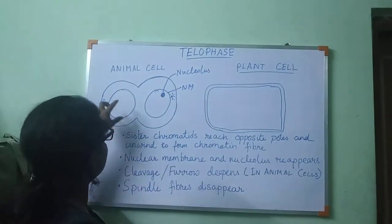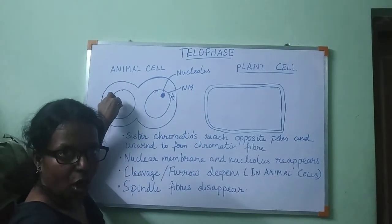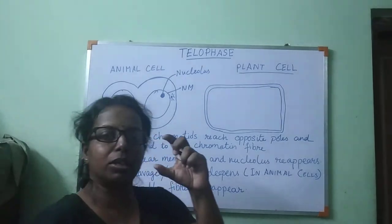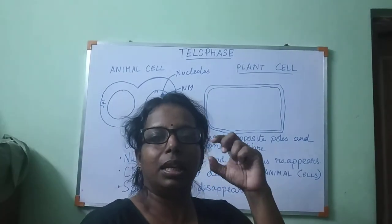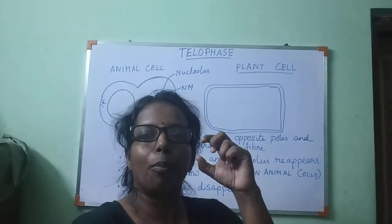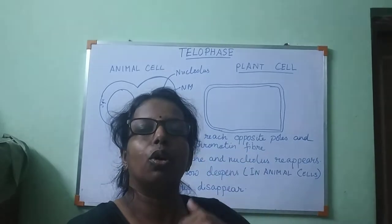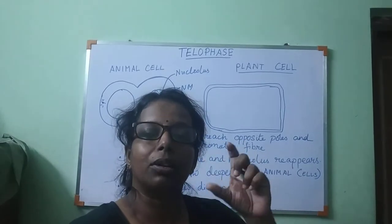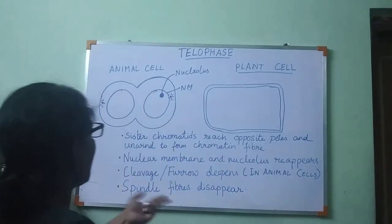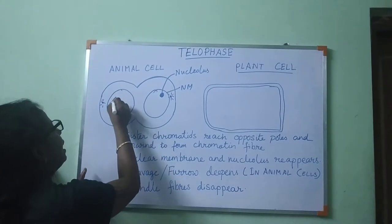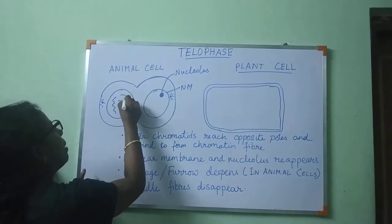The sister chromatids, which went to the opposite poles, were compact DNA or compact chromatin. So the chromatin which became compact now unwinds, and they again become chromatin.